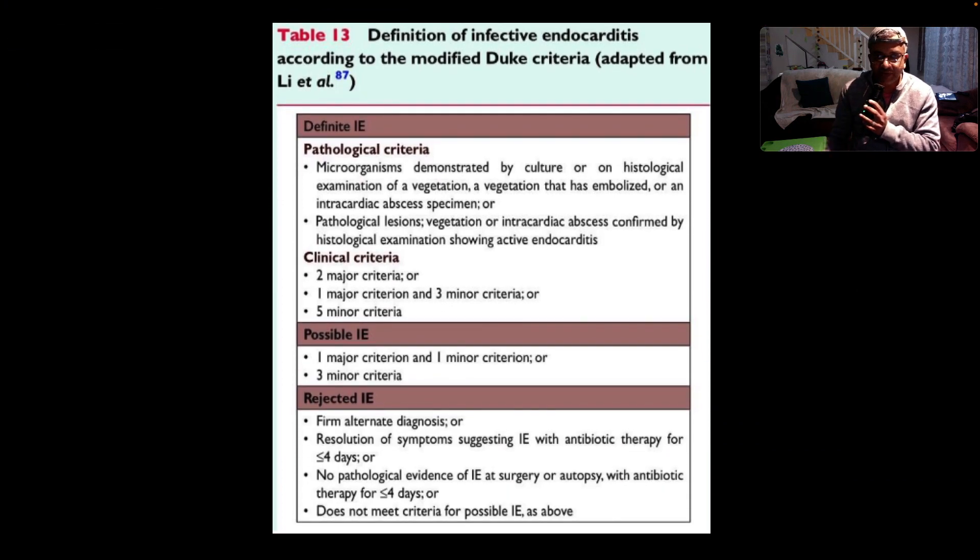To make the diagnosis of infective endocarditis, we use the modified Duke criteria. This is adapted from the European Cardiology Society guidelines. We've got definite, possible, or rejected infective endocarditis. You've got pathological criteria and clinical criteria. In the clinical, you need two major or one major and three minor or five minor.